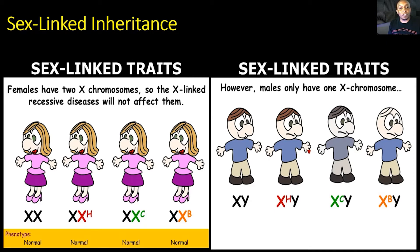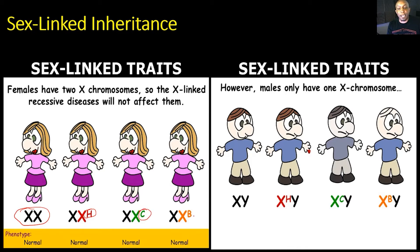Let's take an even deeper dive to show why sex-linked traits predominantly affect males. Females have two X chromosomes, so X-linked recessive diseases will not affect them. Look at this female — her phenotype is normal, but she has two X chromosomes. For hemophilia, she has the additional X to mask or cover that trait, so she won't have hemophilia, but she'll be a carrier. Same thing with colorblindness — she's a carrier for the trait but doesn't have the condition herself. And the same for baldness — she'll be a carrier but won't have baldness, because she has an additional X chromosome.